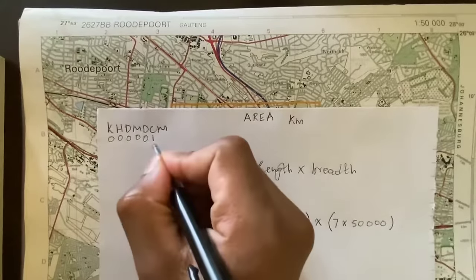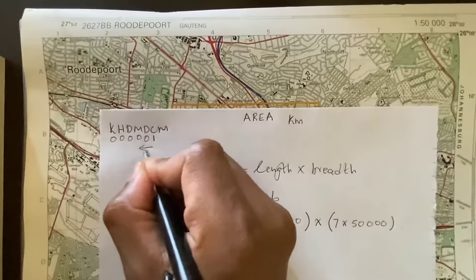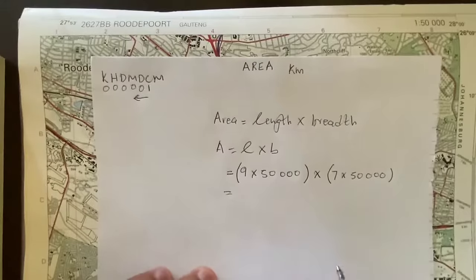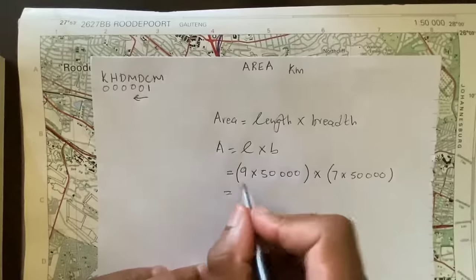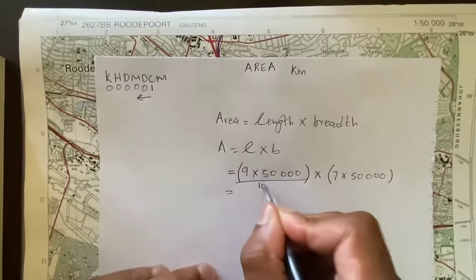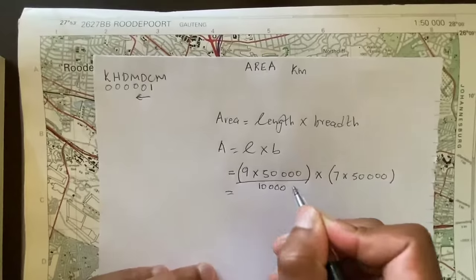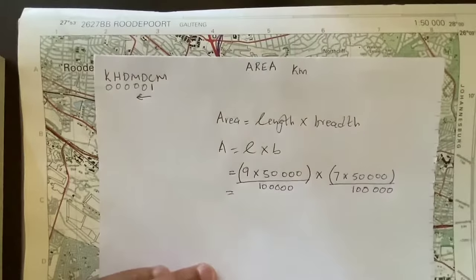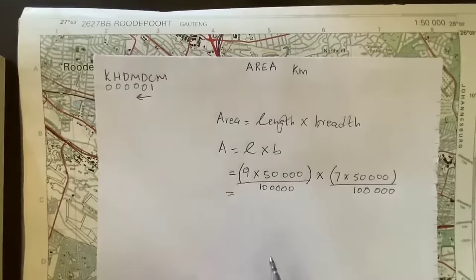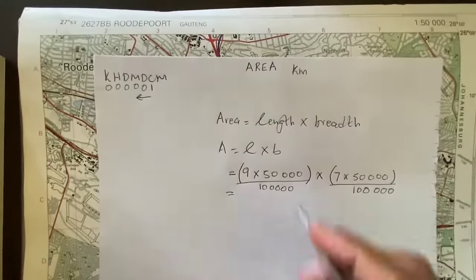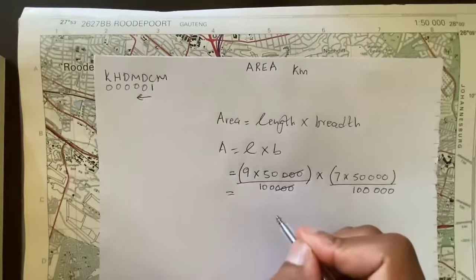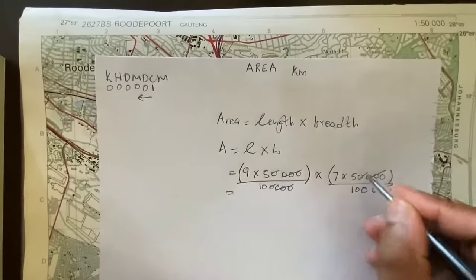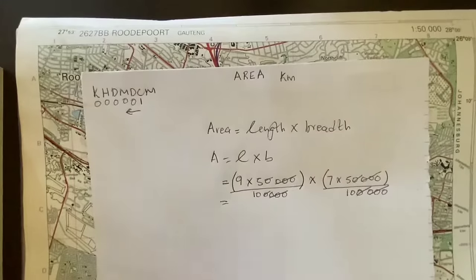From this, I know that moving from centimeters to kilometers means I'm going to divide by 100,000. So I divide both the length and breadth by 100,000 because I'm converting to kilometers. This cancels zeros on both sides, allowing me to do my calculations.